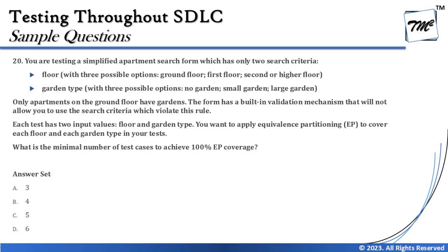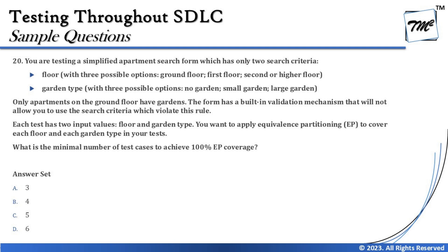Each classification — floor and garden type — has three classes each. Minimum coverage needs three test cases, but all possible combinations would be three by three, which is nine. However, there is a constraint: only apartments on the ground floor have gardens. So the ground floor will have the two garden options — small garden or large garden — while first floor and second or higher floor will not have a garden option.